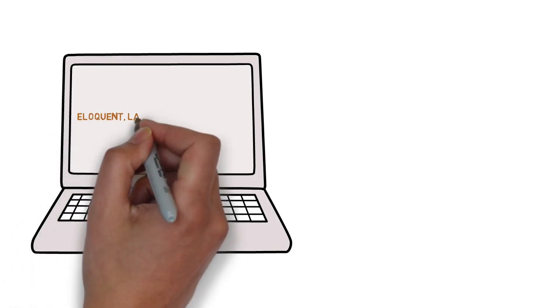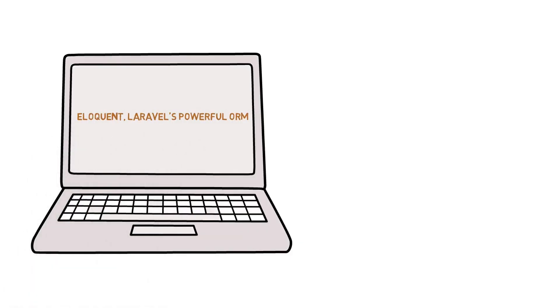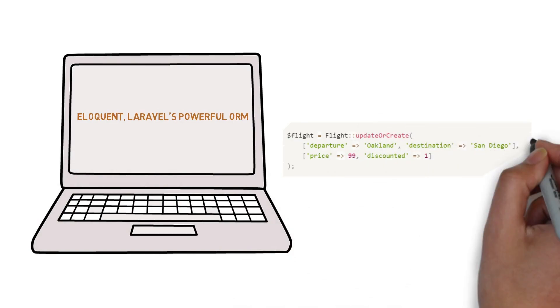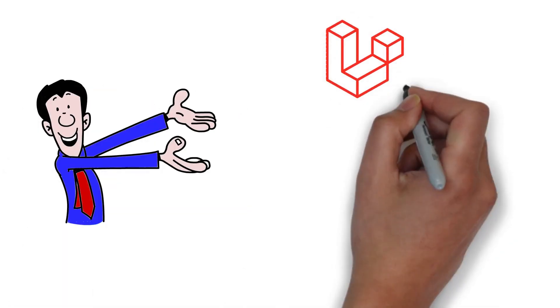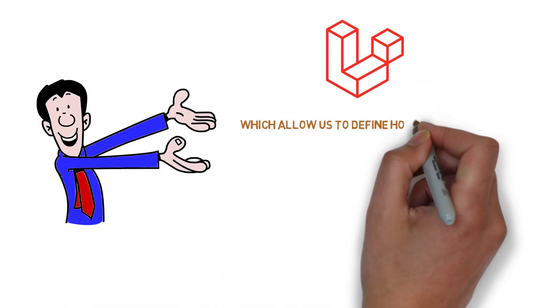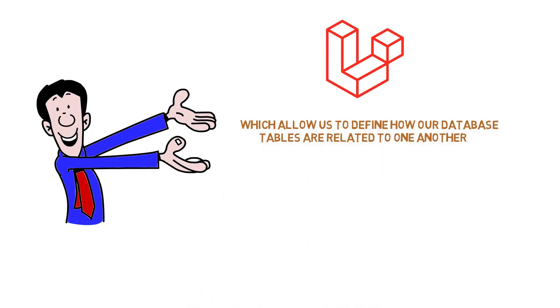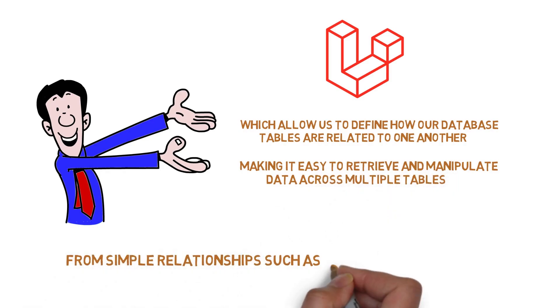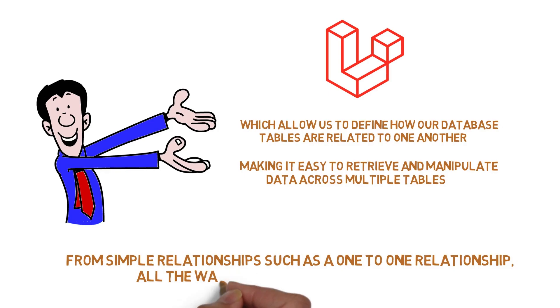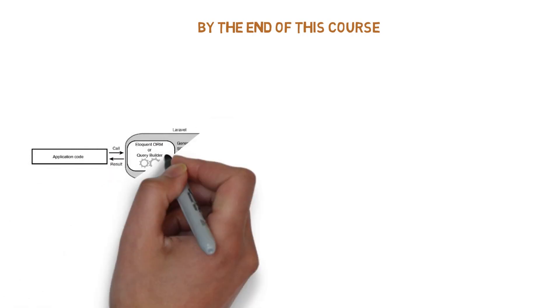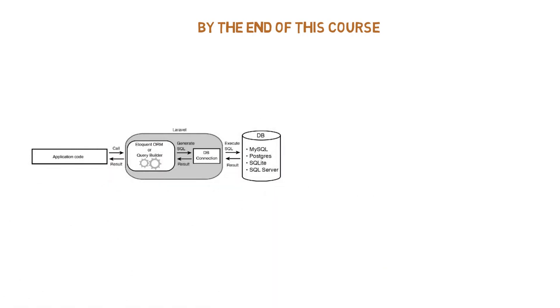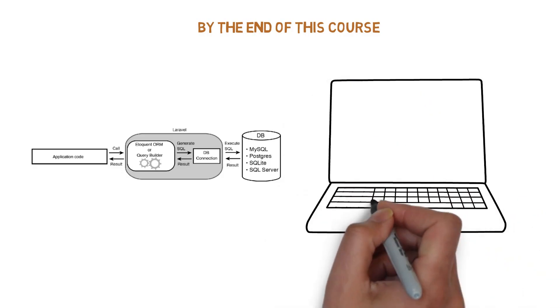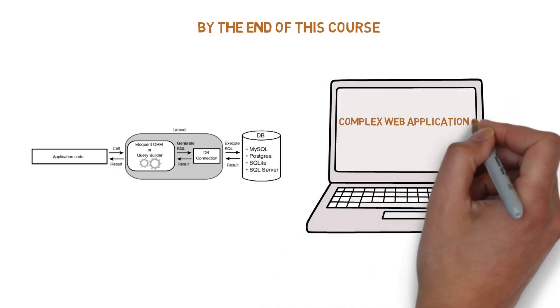From there, we will move on to Eloquent, Laravel's powerful ORM, which allows us to interact with our database using intuitive object-oriented syntax. We will also explore relationships in Laravel, which allows us to define how our database tables are related to one another, making it easy to retrieve and manipulate data across multiple tables — from simple relationships such as one-to-one, all the way to polymorphic relationships. By the end of this course, you will have a deep understanding of migrations, factories, seeders, the query builder, Eloquent ORM, and relationships, and you'll be able to build complex web applications with ease.